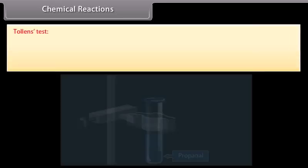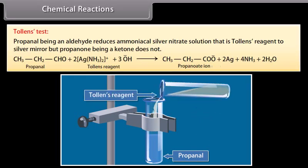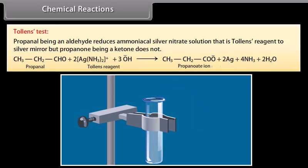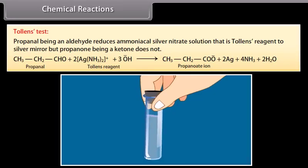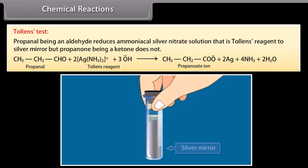Tollens test: propanal, being an aldehyde, reduces ammoniacal silver nitrate solution (Tollens reagent) to a silver mirror, but propanone, being a ketone, does not.